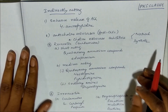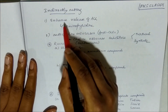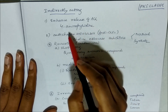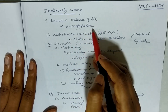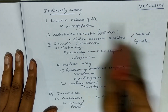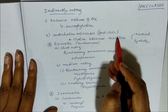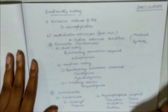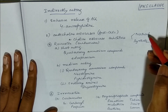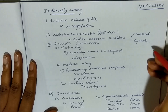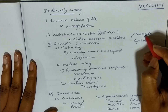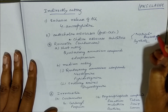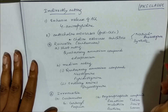For indirectly acting drugs, there are those which increase the release of acetylcholine, for example 4-aminopyridine. Then there are the anticholinesterases or cholinesterase inhibitors. They can be divided as natural and synthetic - only physostigmine is natural, and all others are synthetic.